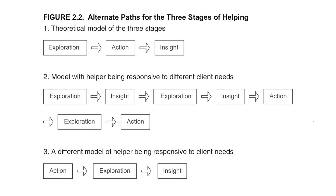Sometimes the situation may require immediate action, and thus there's not a whole lot of exploration of thoughts and feelings initially. For example, if someone is suicidal with a plan and intent to harm themselves, then the immediate concern is their safety. So doing a lot of processing of thoughts and feelings may not be as helpful at the start given that their life is in imminent danger. After the fact, one can process thoughts and feelings once their physical safety has been ensured.